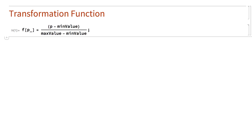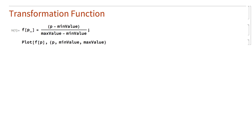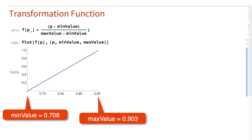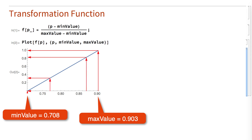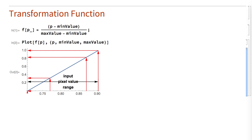The transformation function used in that example is fairly typical of transformations for adjusting brightness and contrast. The plot of this function is a straight line. This particular function was set up so that the maximum pixel value transforms to 1, the minimum pixel value transforms to 0, and other pixel values transform according to this straight line, with the effect being that the range of pixel values in the input image is stretched in the output image to fill the full range from 0 to 1.